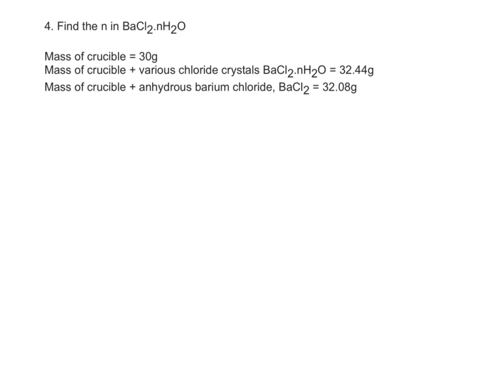Last up, we're going to look at this example. This is a really horrible example, so don't worry too much if you don't like it. Just make sure you're happy with the first two examples, because this is really nasty and it's unlikely they'll give you one this difficult. So we're finding the n in barium chloride, BaCl₂·nH₂O, combined with water. Remember, anhydrous means without water. So let's look at what we've got in the question.